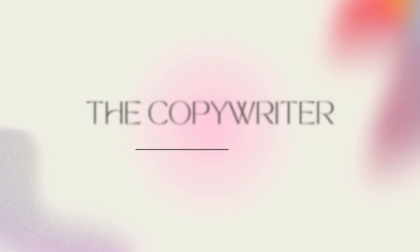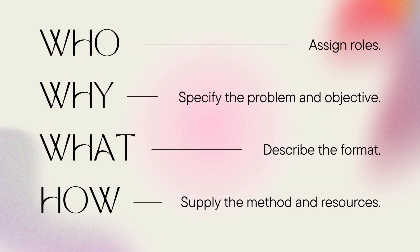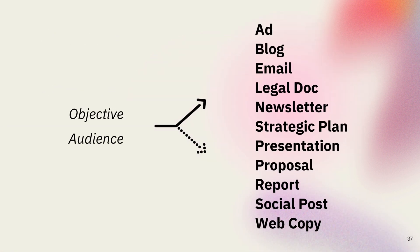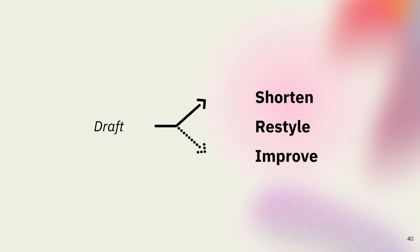The copywriter can write content for a broad spectrum of needs based on a variety of prompts and supplied resources. Here, the full Who, Why, What, How prompting framework is really important. You can have it compose an email, a document, or website copy based on a specified objective and audience. You can supply an outline for it to follow, or conversely, have it create an outline for you to turn into copy with your own writing. You can supply your own draft and ask it to reduce the length or adapt it to a specific style.